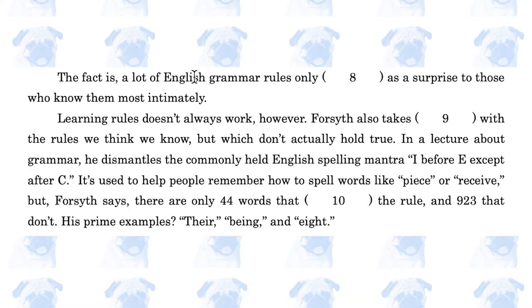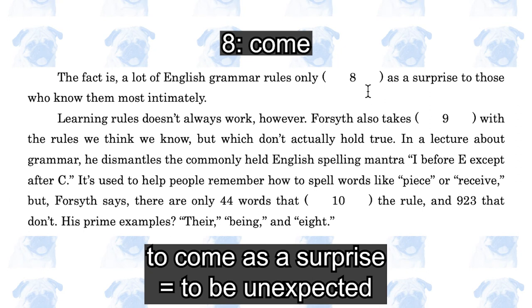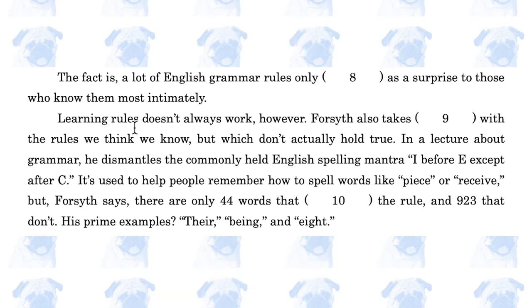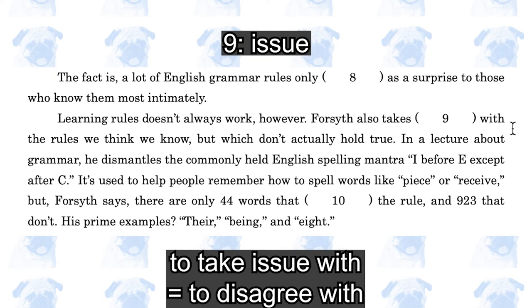The fact is, a lot of English grammar rules only blank as a surprise to those who know them most intimately. The options are: appear, come, occur, spring. The answer is 'come as a surprise' — that is the phrase. Learning rules doesn't always work, however. This person also takes blank with the rules we think we know but which don't actually hold true. The options are: disagreement, issue, object, opposition. The answer is 'take issue with' — to take issue with is to have a problem with or to disagree with.